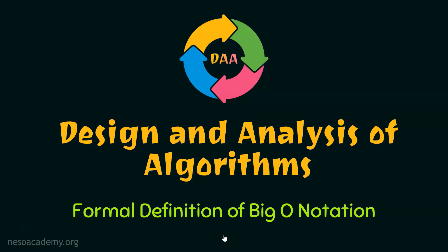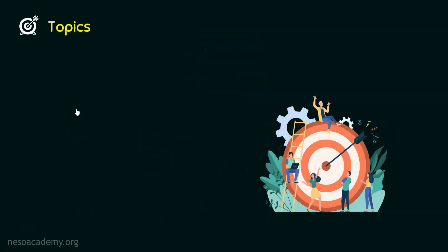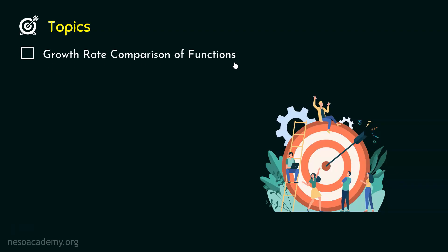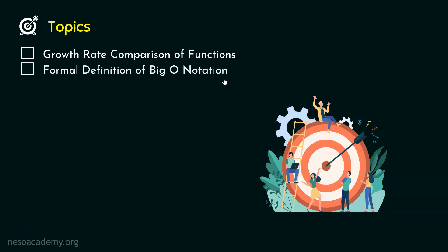Let's get started with this lecture. The first topic is Growth Rate Comparison of Functions. We will compare the growth rates of two functions, as this will set the base for understanding the formal definition of Big O Notation. After that, we will move to the definition itself.